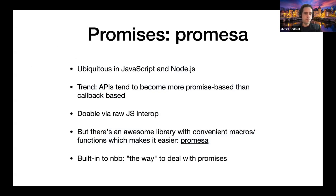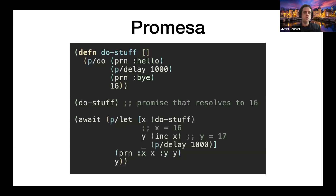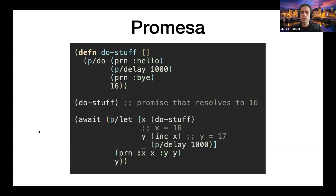Promessa is a very convenient library to deal with promises. Here's an example: a function called `do-stuff` prints 'hello', waits one second, prints 'bye', then returns 16. This function is asynchronous because it returns a promise. If you evaluate `do-stuff` in the REPL you get back a promise. But if you use `p/let` and bind it to `x`, then `x` is really the value 16 — it takes one second before `x` takes on that value.